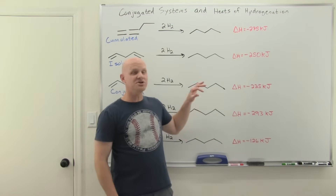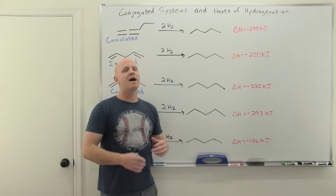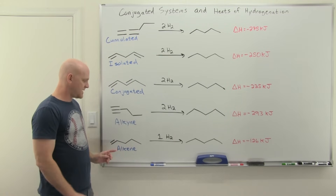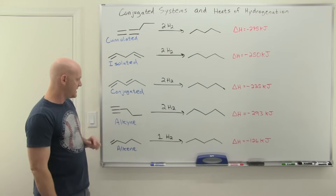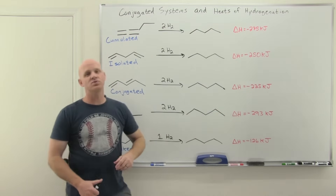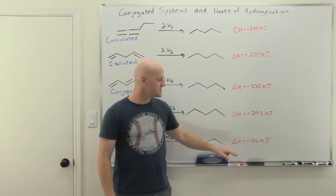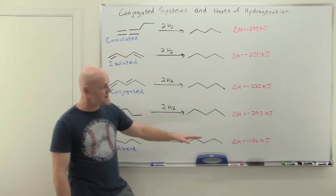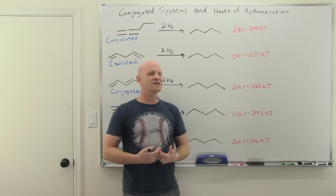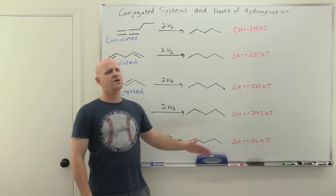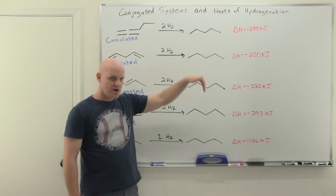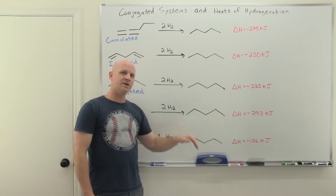We're going to talk about heats of hydrogenation, something we visited back with alkenes. When we hydrogenate 1-pentene — adding one equivalent of hydrogen to produce pentane — it releases 126 kilojoules of energy. So delta H for this reaction is negative 126 kilojoules. Heats of hydrogenation are often reported as absolute values, so when people say 126, keep in mind that means delta H is negative 126. These reactions are always exothermic — energetically going downhill.